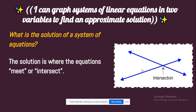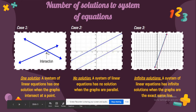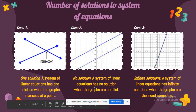There are three cases for the number of solutions of a system of equations. Case one is called one solution: a system of linear equations has one solution when the graph intersects at a single point. Case two is called no solution: a system of linear equations has no solution when the graphs are parallel lines.